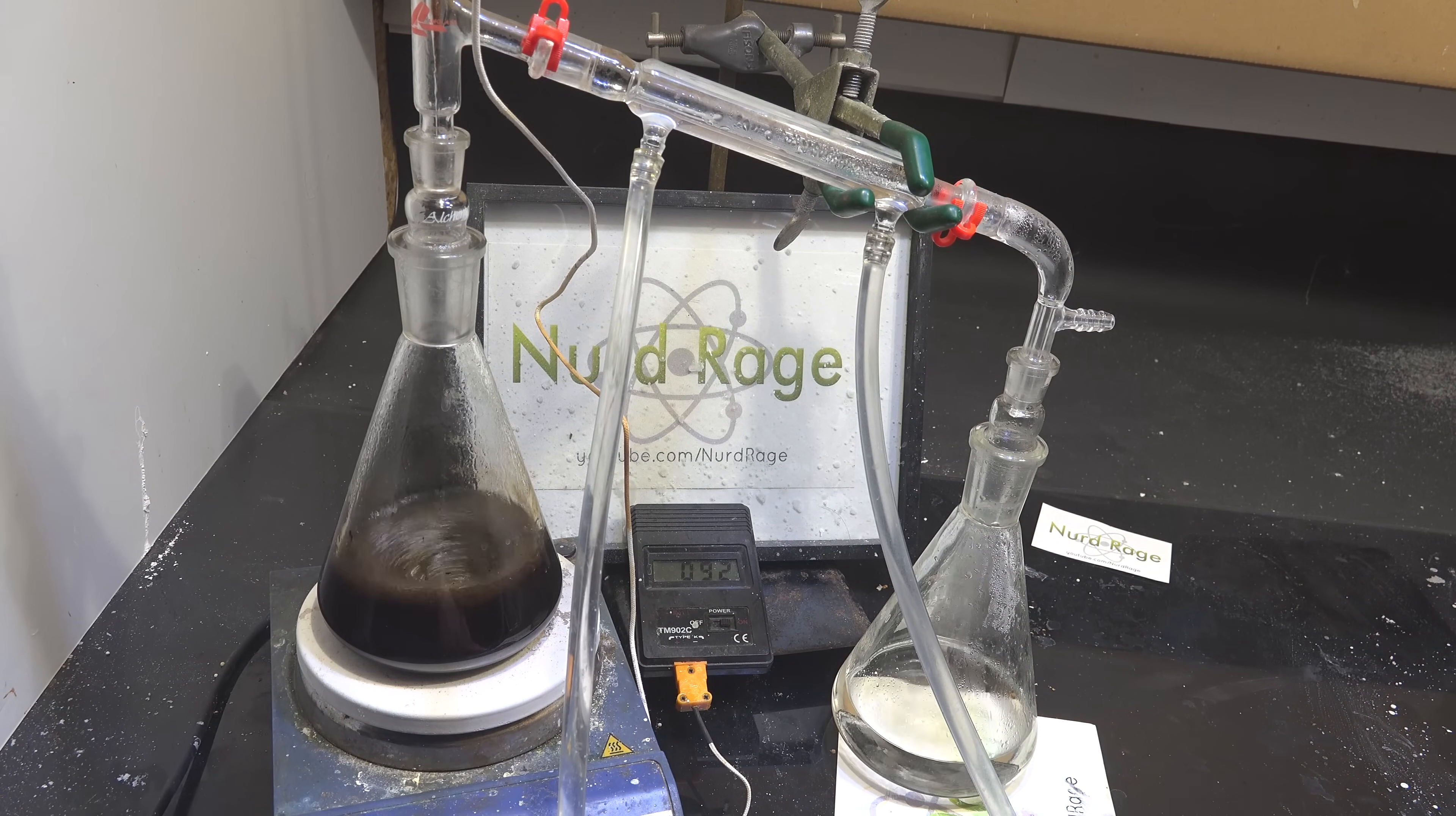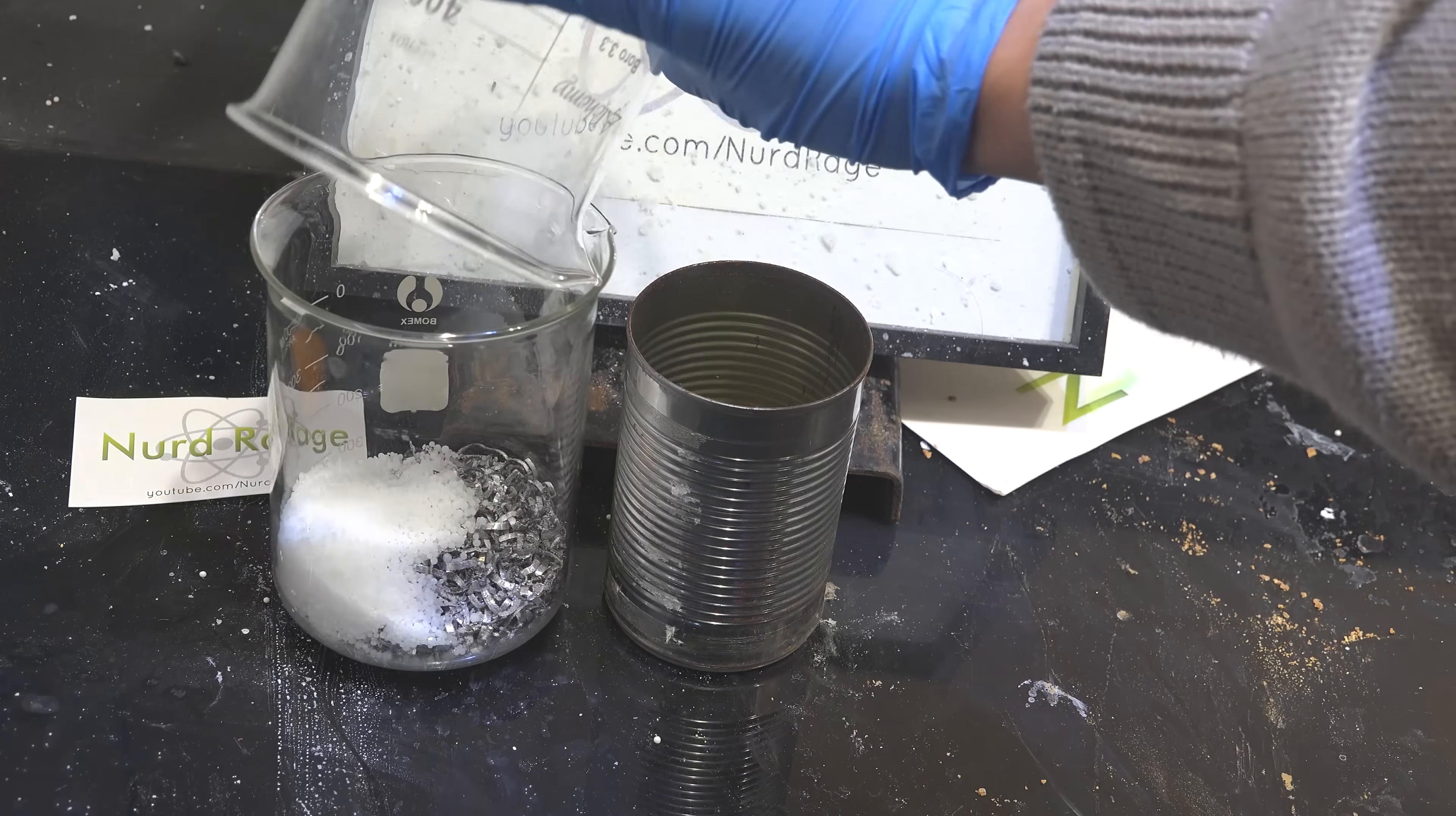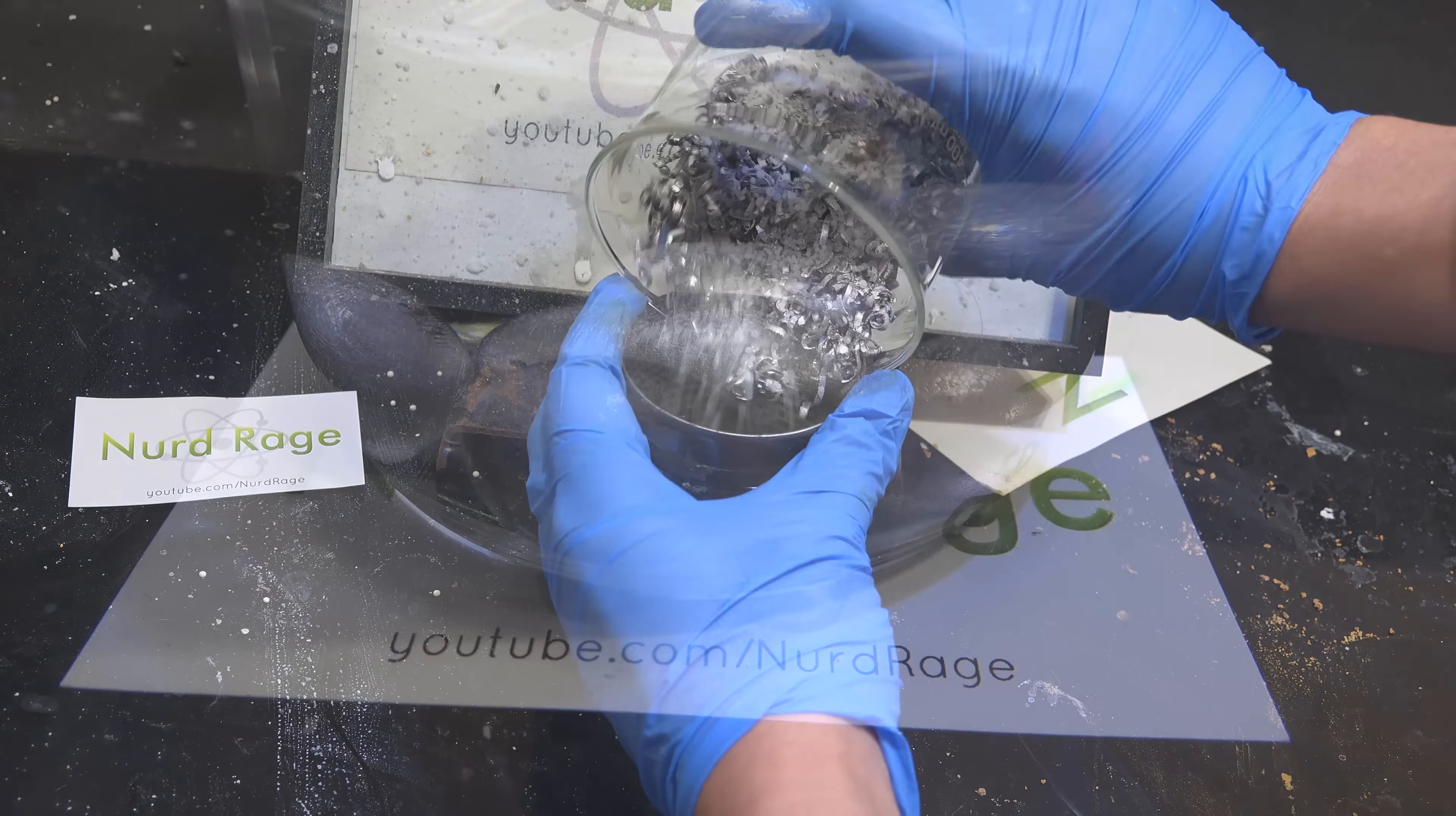The dioxane is made from antifreeze, the sodium hydroxide is from drain cleaner and the magnesium can be obtained from fire starters. So on the whole, sodium is now accessible to the amateur chemist.